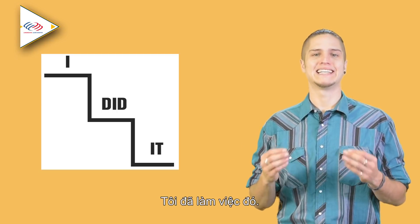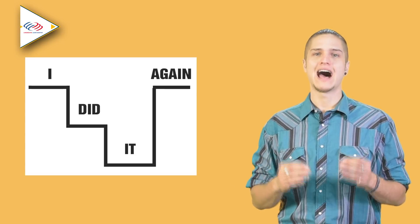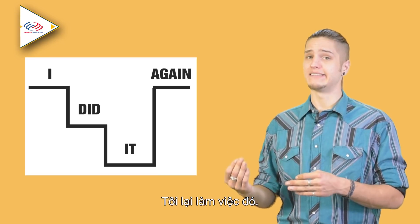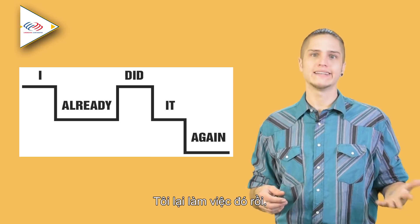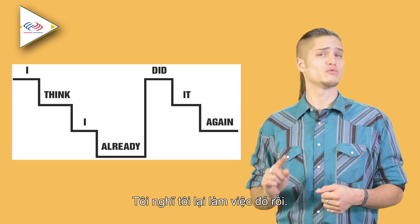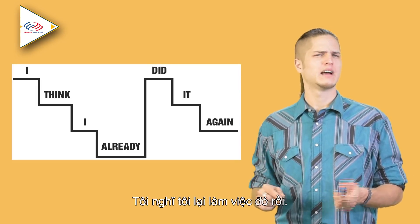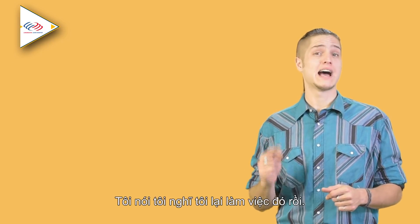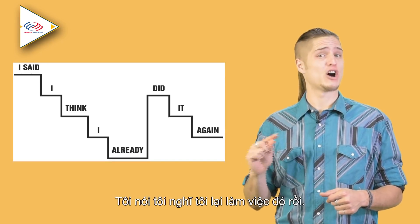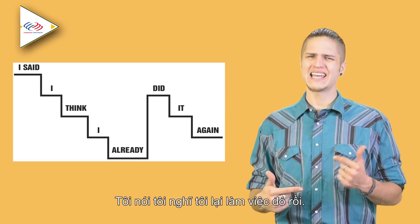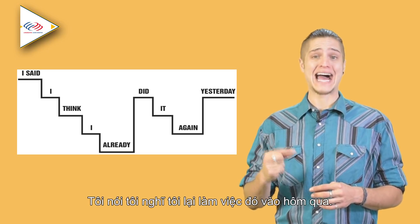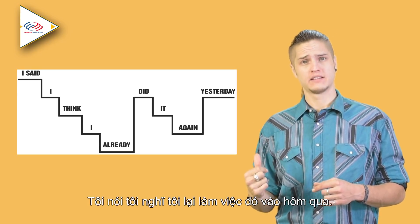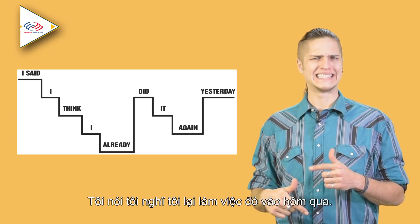Listen to these progressive examples: 'I did it.' 'I did it again.' 'I already did it again.' 'I think I already did it again.' 'I said I think I already did it again.' 'I said I think I already did it again yesterday.' Notice how each sentence builds on the last using staircase intonation.